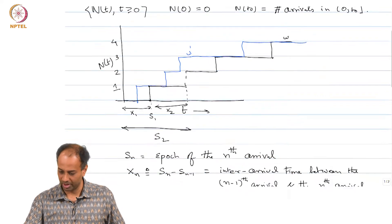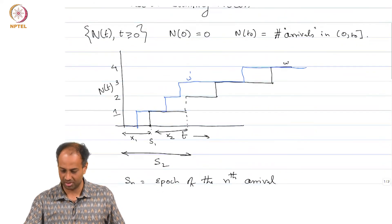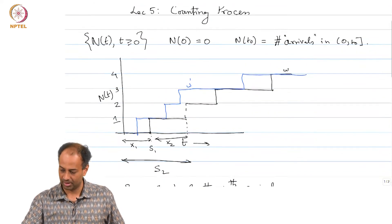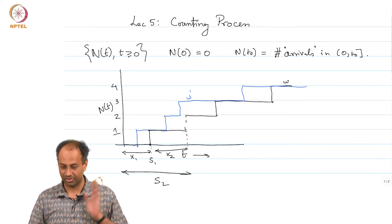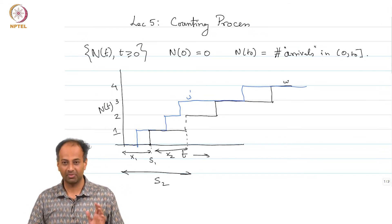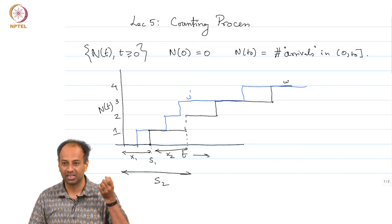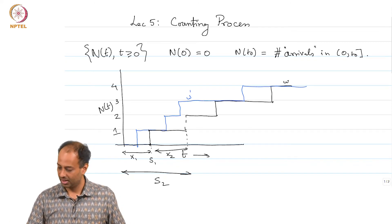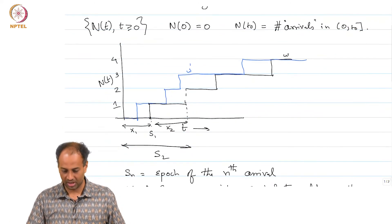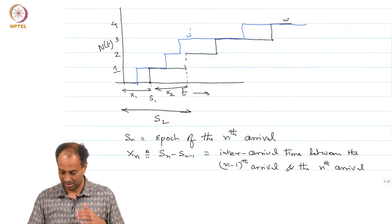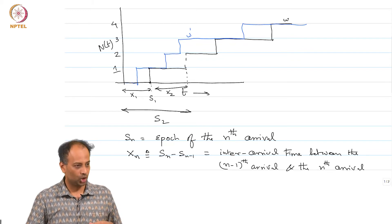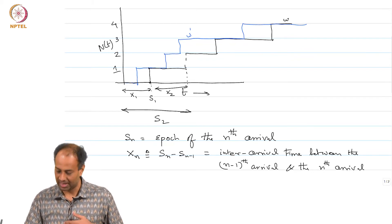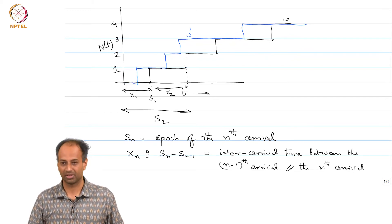We have talked about a counting process — it is a non-negative integer-valued process defined in continuous time, which counts the number of arrivals until time t. Associated with N(t) are two sequences of random variables: Sₙ's, the arrival epochs, and Xₙ's, the inter-arrival times.